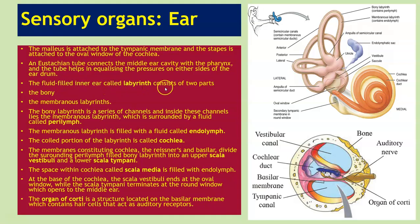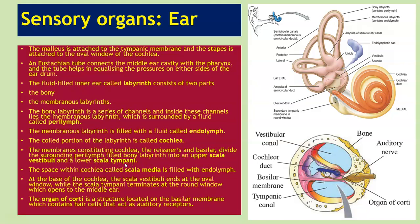The fluid-filled inner ear called the labyrinth consists of two parts: the bony and the membranous labyrinth. The bony labyrinth is a series of channels, inside which lies the membranous labyrinth surrounded by a fluid called perilymph. The membranous labyrinth is filled with a fluid called endolymph. The coiled portion of the labyrinth is called the cochlea. The membranes constituting the cochlea — the Reissner's and the basilar membranes — divide the perilymph-filled bony labyrinth into an upper scala vestibuli and the lower scala tympani. The space within the cochlea called the scala media is filled with endolymph. At the base of the cochlea, the scala vestibuli ends at the oval window while the scala tympani terminates at the round window, which opens to the middle ear.